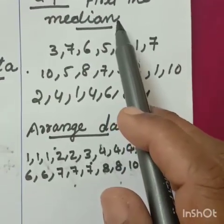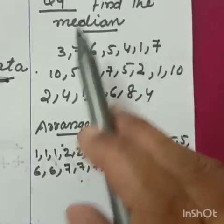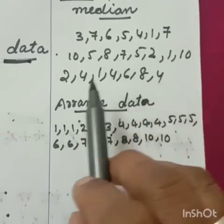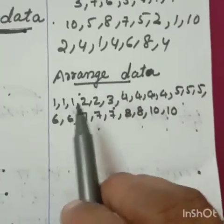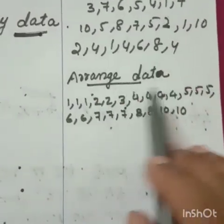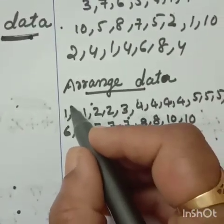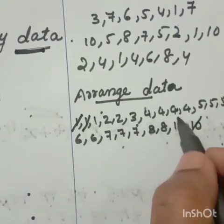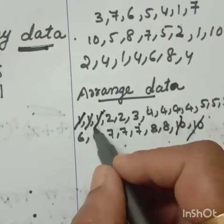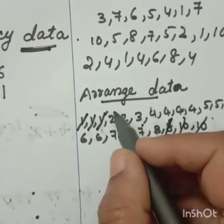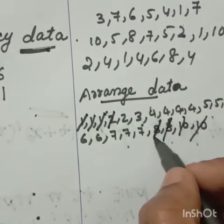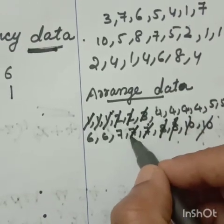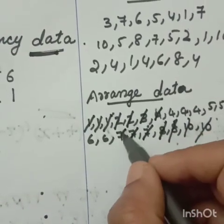Find the median. For finding the median, just now I told that first you have to arrange the data in ascending or descending. I arrange the data in ascending. After that what you have to do? You cut out first, last, second, second last, third, third last, fourth. Like that you cut out.